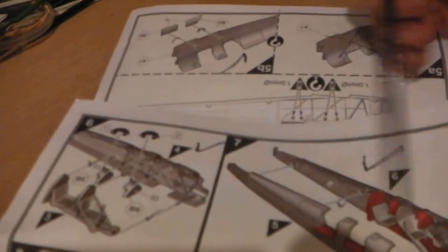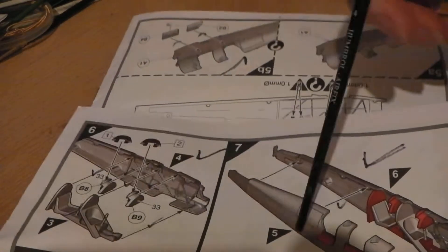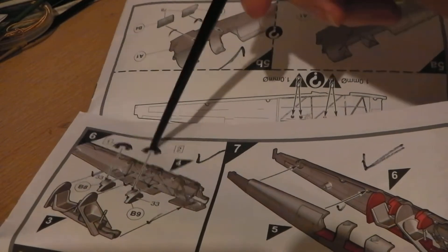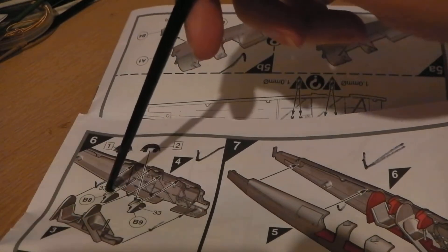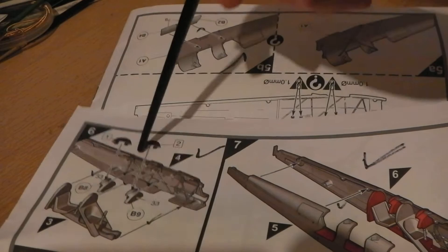Likewise, when you're putting the fuselage together, perfectly good. Obviously, put the decals on the instrument panels before you think about gluing them in.